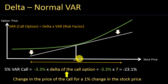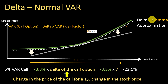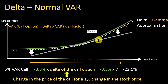The delta normal VAR approach is not practical for nonlinear derivatives. For smaller shifts, the estimate might be close to the real number, but for larger shifts in the underlying, the bias will be quite large. One way to fix this is by introducing the delta gamma approximation. If, in addition to the delta, we introduce another component called the gamma of the option, the estimated option price to stock price relationship becomes very close to the real relationship — you can see the dotted white line is very close to the green curve.